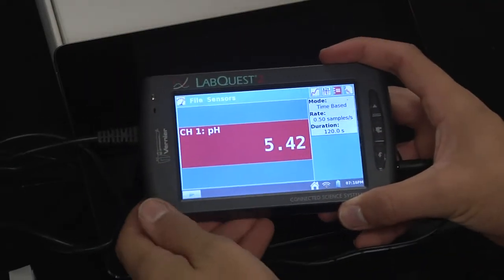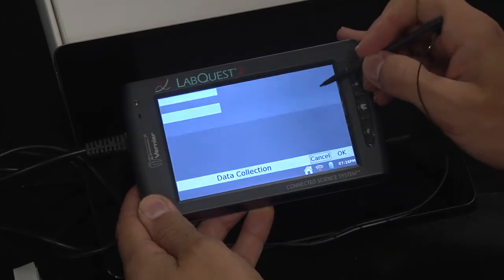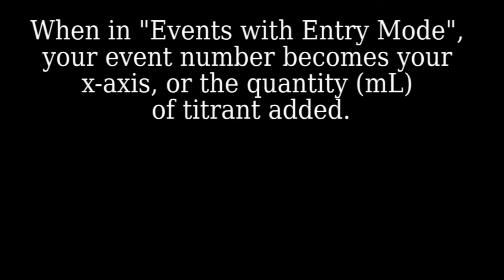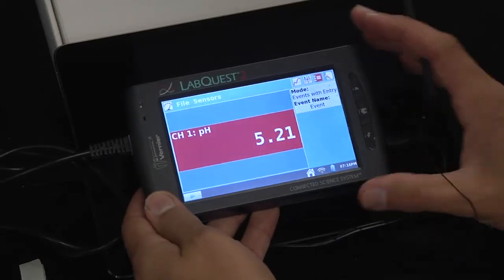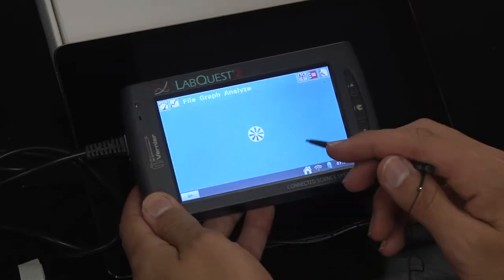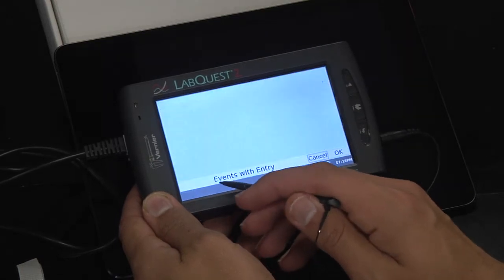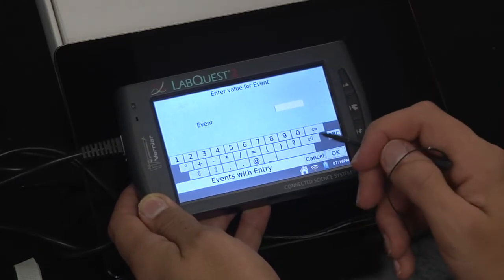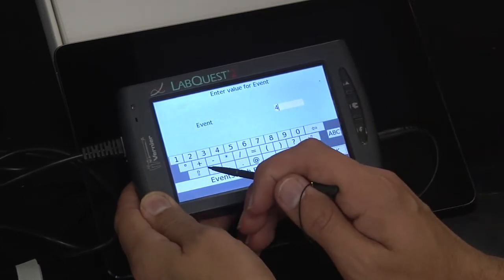Okay so once your lab quest is connected to your iPad you can go ahead and click up here to change it from a time-based trial to events with entry. Just like in the first lab. Now that we have this events with entry we can hit the play button and whenever you want to record an entry just click keep. I would name the event as the volume of titrant that has been added in milliliters. So for example if I've added so far 4 milliliters I would call this event number 4.